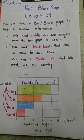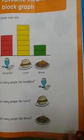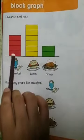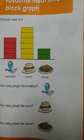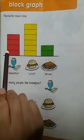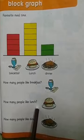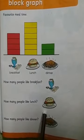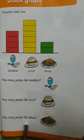Let's open your learner book page number 59 — the favorite mealtime block graph. Here we have a favorite mealtime block graph. You will count the blocks. How many people like breakfast? One, two, three, four — four people like breakfast. How many people like lunch? One, two, three, four, five, six — six people like lunch. How many people like dinner? One, two — only two blocks, so only two people like dinner.